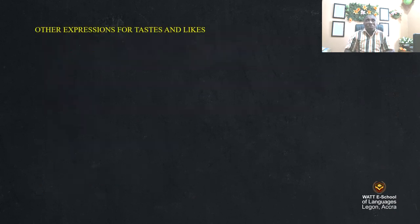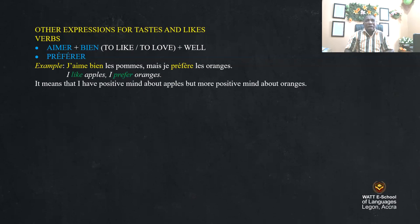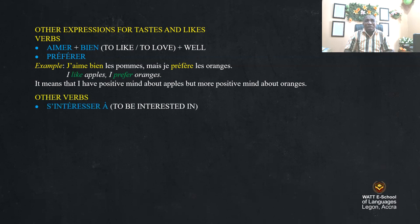Other expressions for taste and likes. 'Aimer bien' — to quite like, plus 'préférer' — to prefer. Example: 'j'aime bien les pommes, mais je préfère les oranges' — I like apples, but I prefer oranges. It means you have a positive feeling about apples, but a more positive feeling about oranges. Other verbs: 's'intéresser à' and 'être intéressé par' — to be interested in.